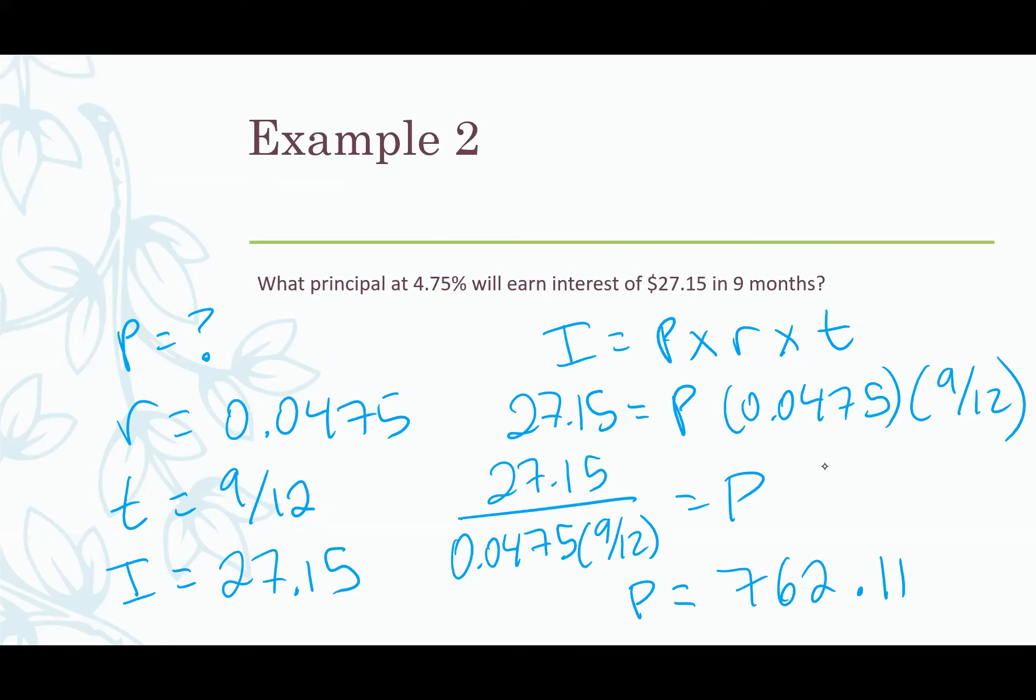And we do this by doing the opposite operation. So each side is going to get divided by 0.0475 and by 9/12. So I essentially just move them so they're not with the P anymore and then they're going to divide 27.15. Put that into your calculator and you get $762.11. So if you invested that much money for nine months at this interest rate you would earn just over $27.